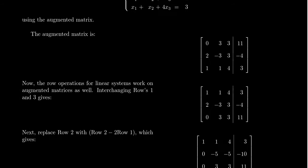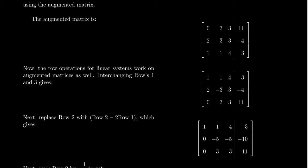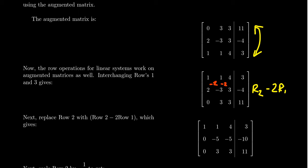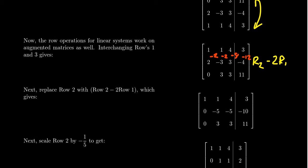Now let's start performing elementary row operations on this augmented matrix. First, I'm going to interchange rows one and three — the first becomes the last and the last becomes the first. After the interchange, I want to take the second row and subtract from it two times the first row, multiplying the first row by -2 to get [-2, -2, -8, -12], then adding those entries to the second row.